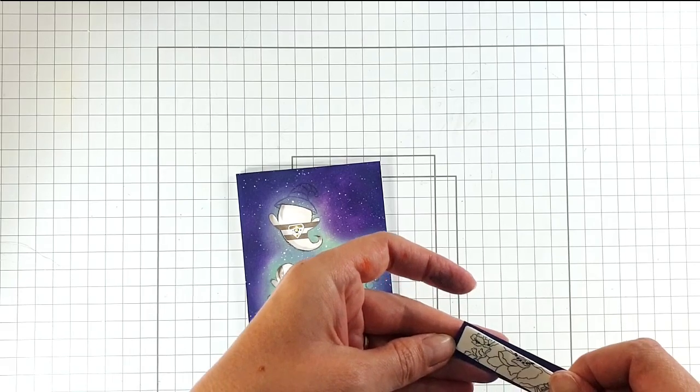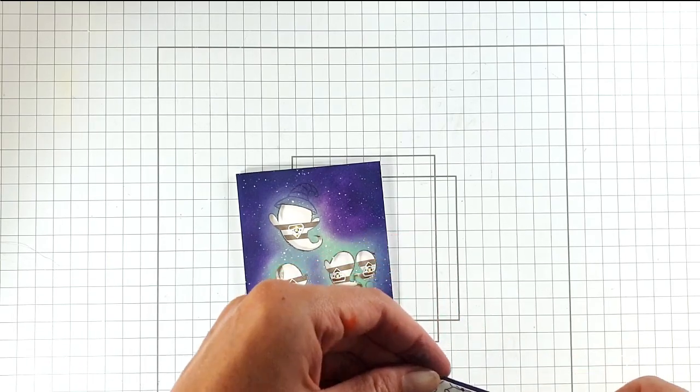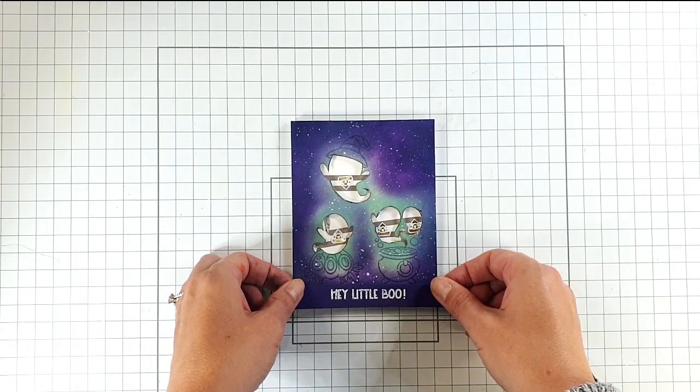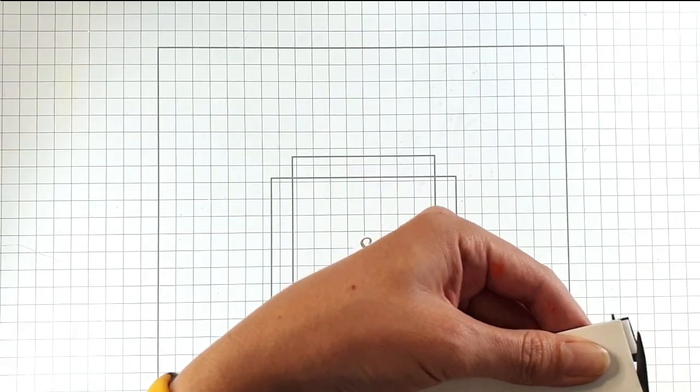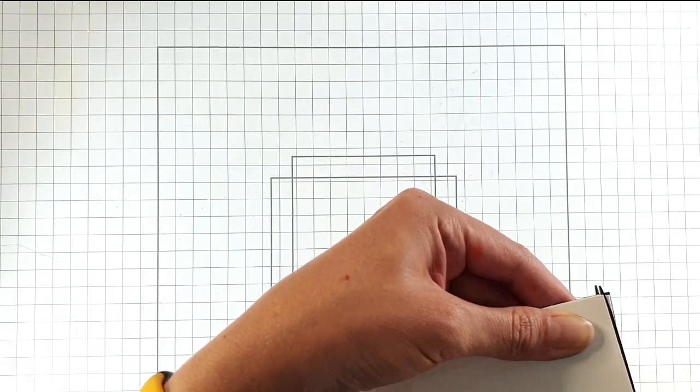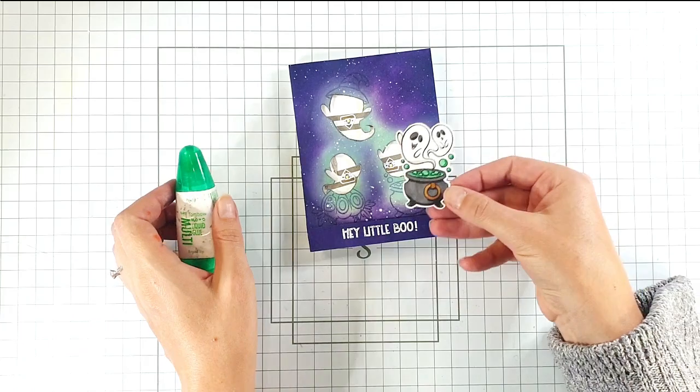Then I'm going to pop this up on foam tape. I'm going to add that to the bottom of my card, and I'm going to trim that little bit of excess off the back.